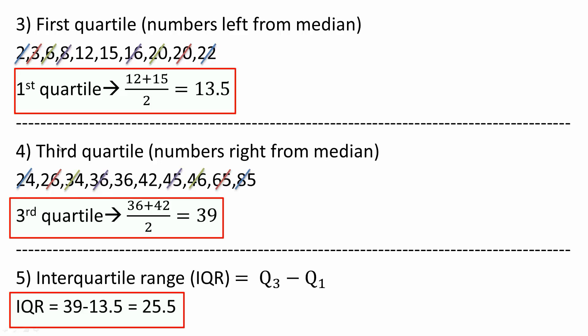So 24 all the way to 85, same exact procedure. Cross the lowest with the highest, lowest with the highest. I only have two numbers left. 36 plus 42 divided by 2, and I get 39 as the third quartile. The interquartile range is going to be the third quartile minus the first quartile.